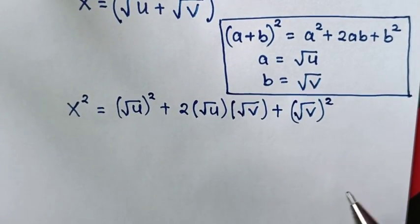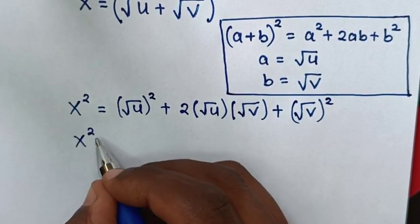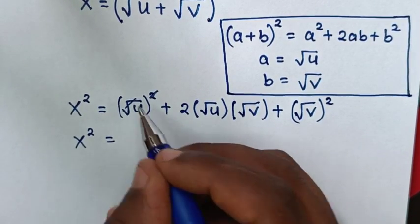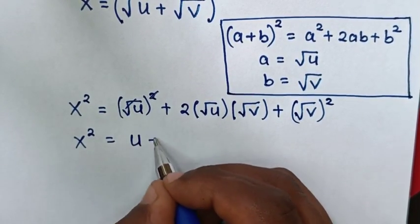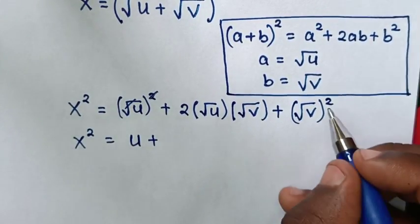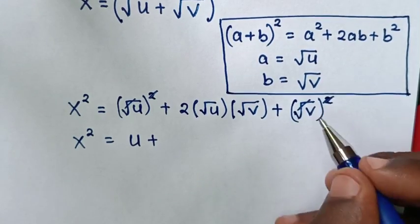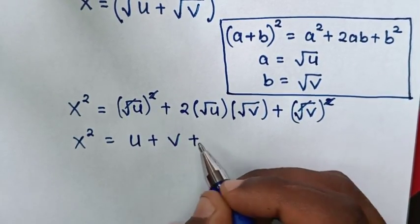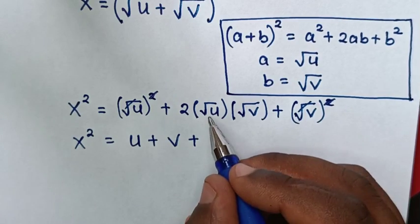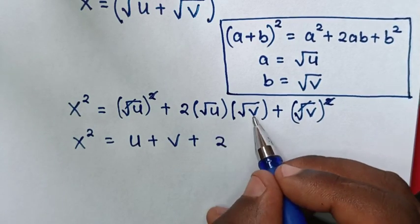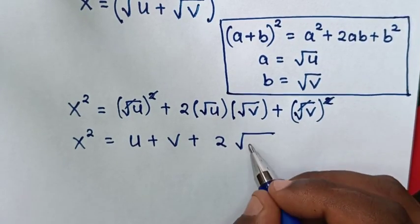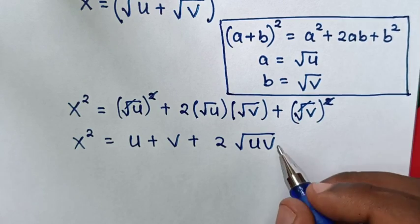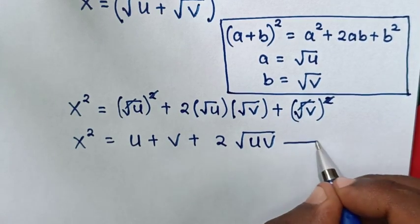Then our equation becomes: x² equals u plus v plus 2 times square root of u times square root of v, which is square root of uv. The squares and square roots cancel accordingly. So this will be equation 1.